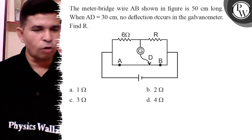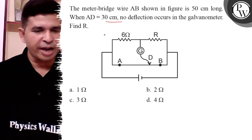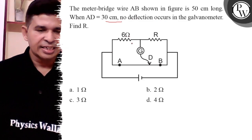50 cm long. When AD is 30 cm, no deflection occurs in the galvanometer. Find R. We know that 6 ohms is given.